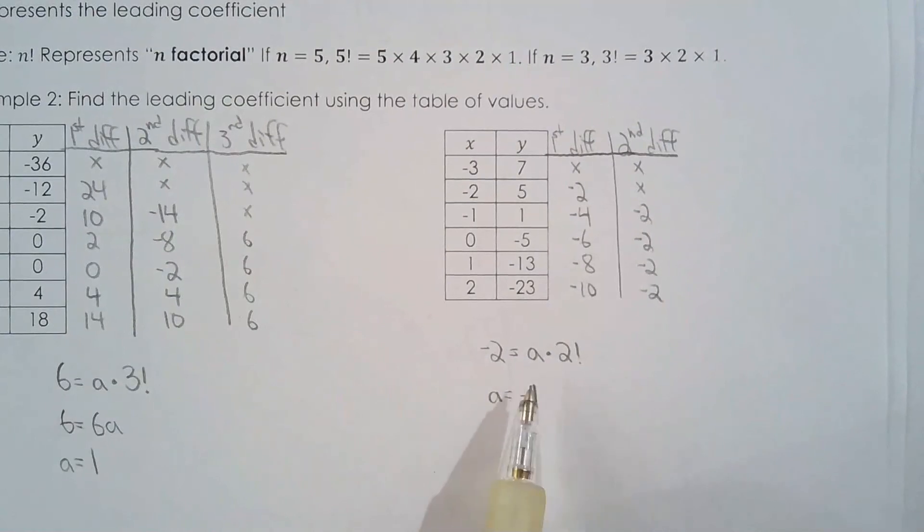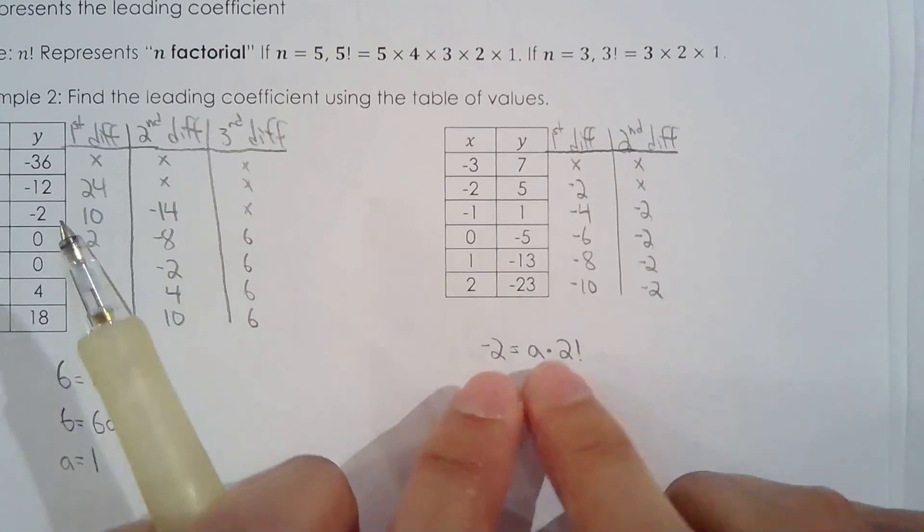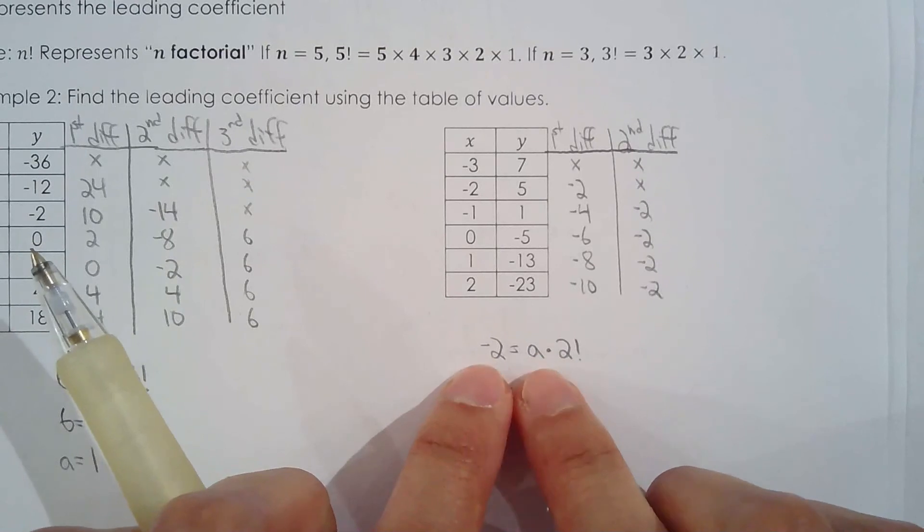Quick thing I want to mention, if your nth differences are negative, then your leading coefficient will be negative. If the nth differences are positive, then your leading coefficient is positive, because n factorial will strictly be positive. So the signs of A and the nth difference must be the same.